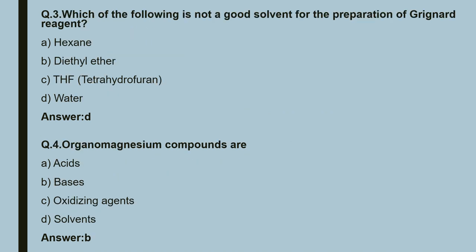Question number 3: which of the following is not a good solvent for the preparation of Grignard reagents? Options are: first, hexane; second, diethyl ether; third, THF; fourth, water. The correct option is D, that is water.